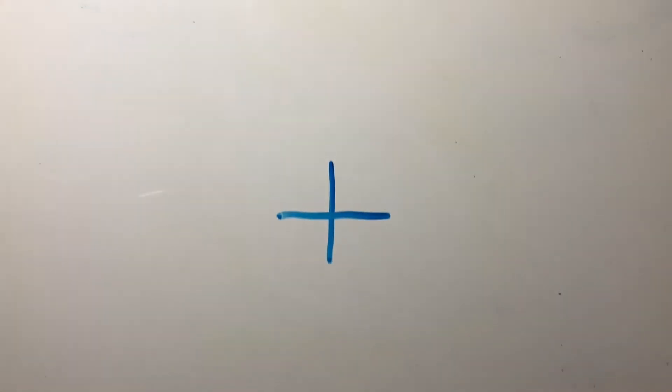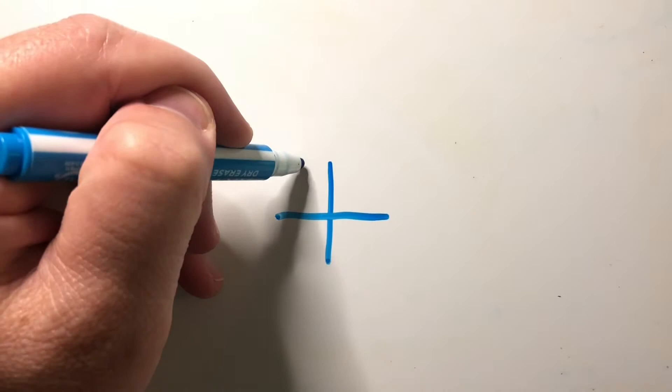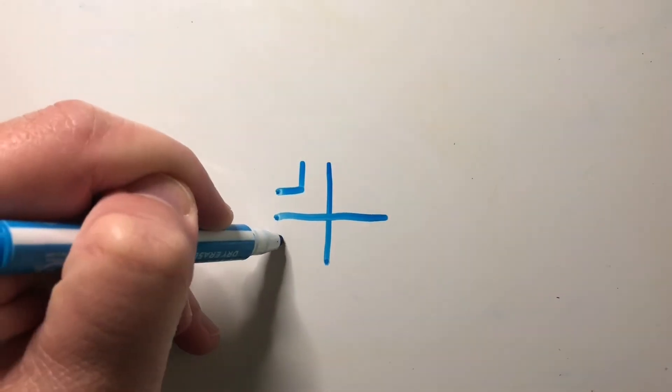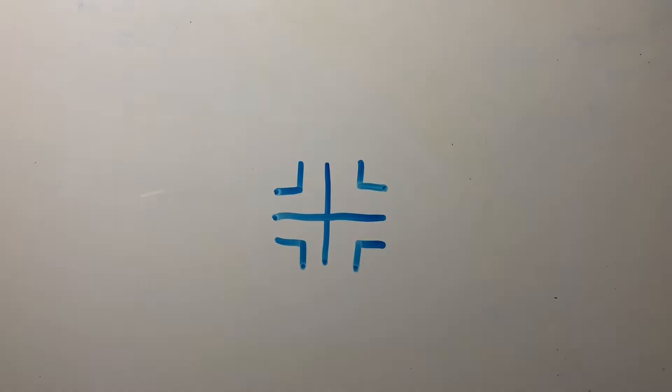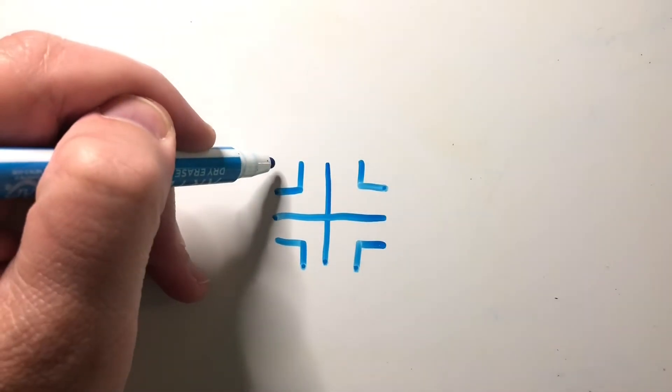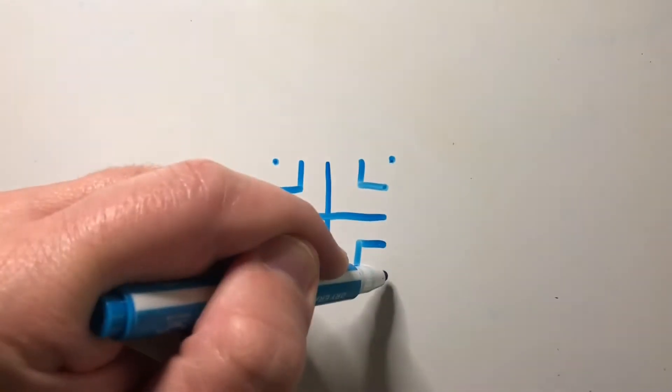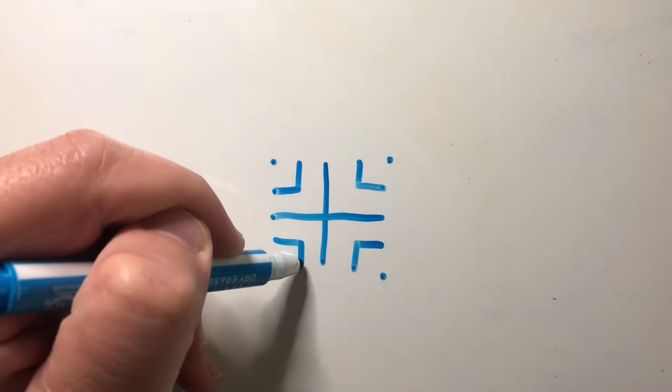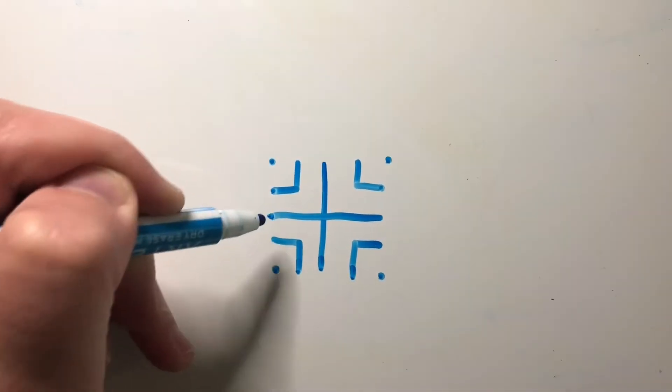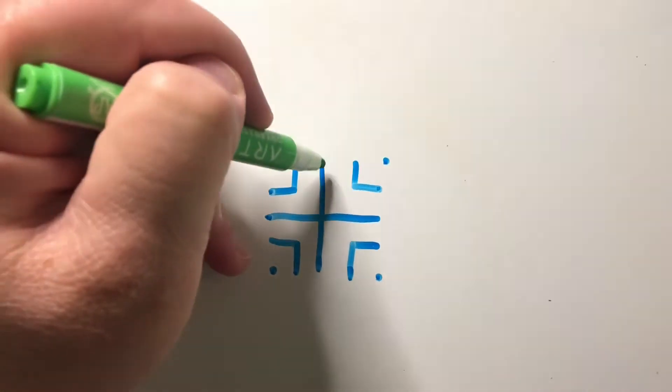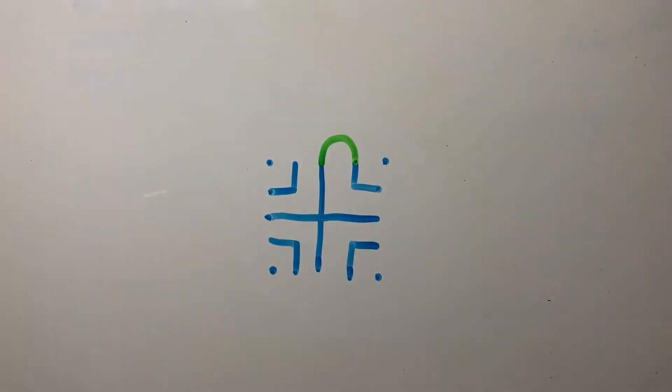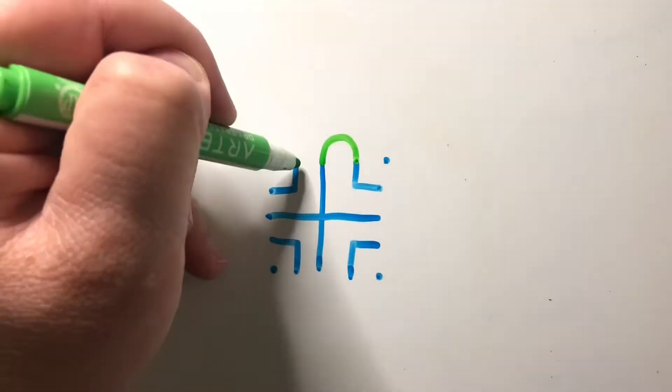We're going to start with the plus sign again. But this time, we're going to add another layer of kind of an L shape in between the plus and the dots in the corners of our little starting square. I'm going to use a different color for my curved lines so you can see how they connect with the starting.